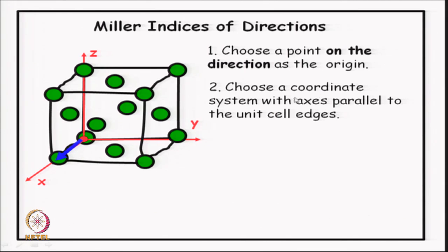The next step is to choose a coordinate system — the crystallographic coordinate system — with axes parallel to the unit cell edges. In this case I have chosen x, y, and z with the three directions parallel to the unit cell edges. Even in a non-cubic crystal, even if the angle between x and y is not 90 degrees and z is not perpendicular to x and y, we will always choose our x, y, and z parallel to the unit cell edges. This is what is called the crystallographic coordinate system.